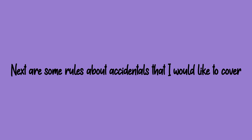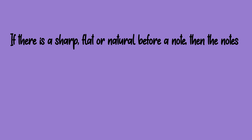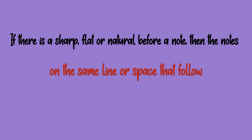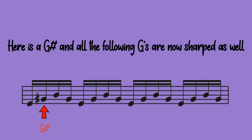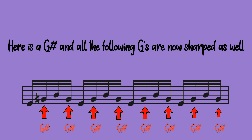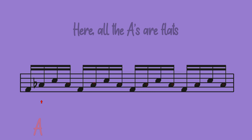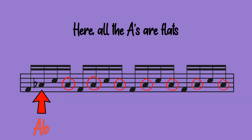Next are some rules about accidentals that I would like to cover. If there is a sharp, flat, or natural before a note, then the notes on the same line or space that follow are also sharp, flat, or natural. Here is a G sharp and all the following G's are now sharped as well. Here all the A's are flats.